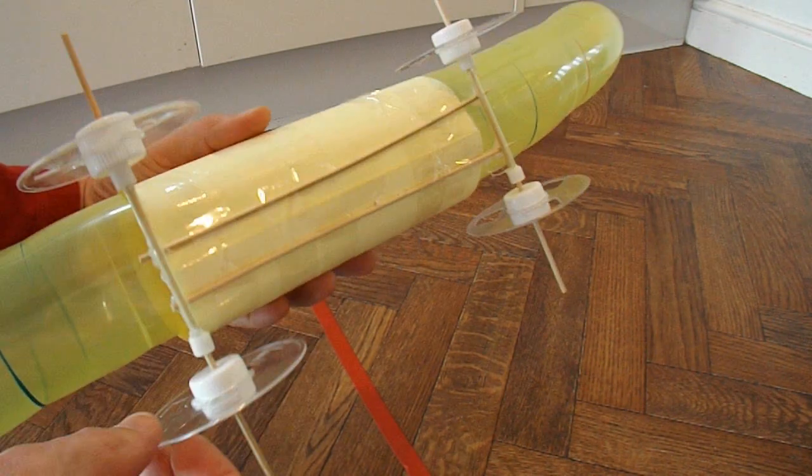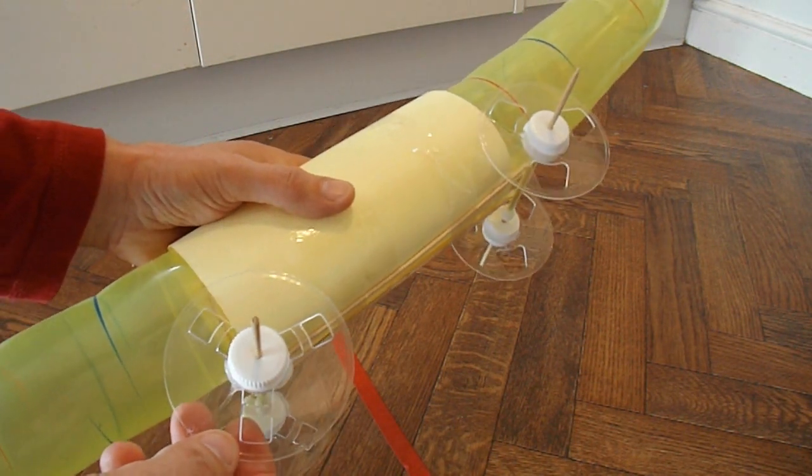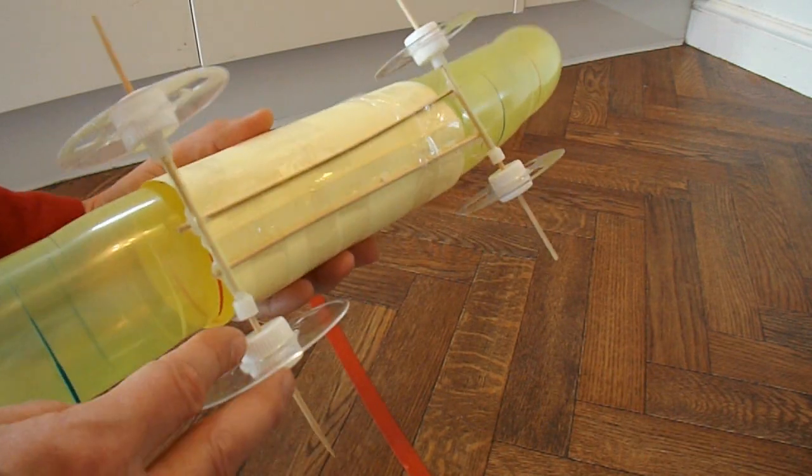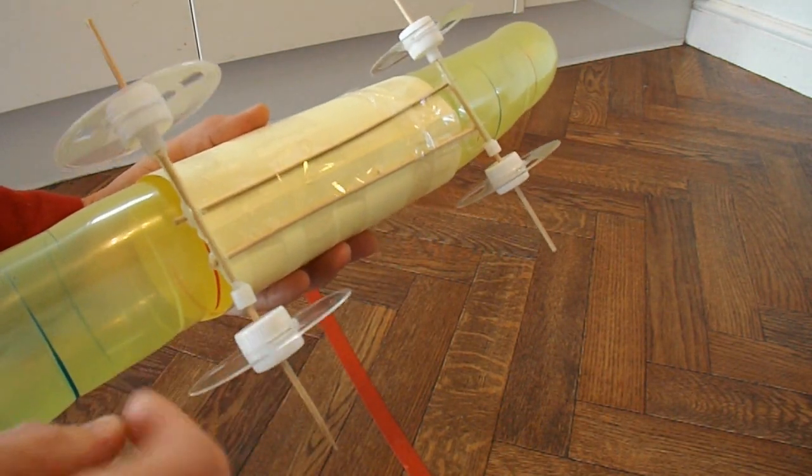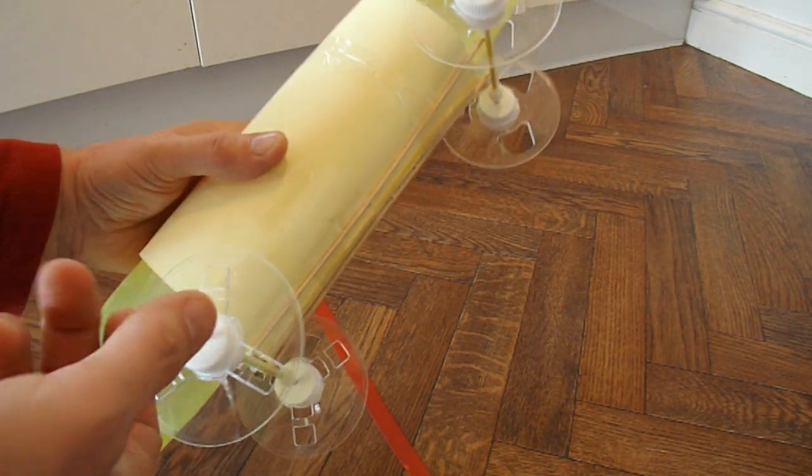The wheels are plastic discs. They're actually VHS videocassette spools. Plastic bottle tops hot glued either side to give us the hubs because they've got a big hole in the middle otherwise.